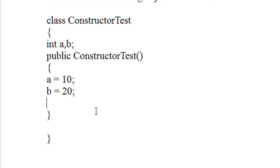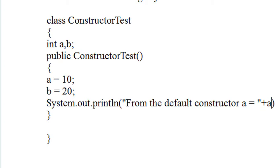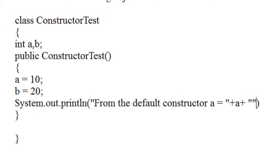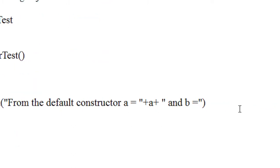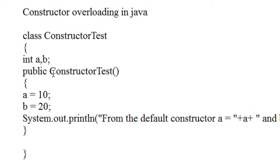I just assign two values for the variables a and b. Here I am going to print those values using println from the default constructor — a is equal to plus a, and b is equal to plus b.